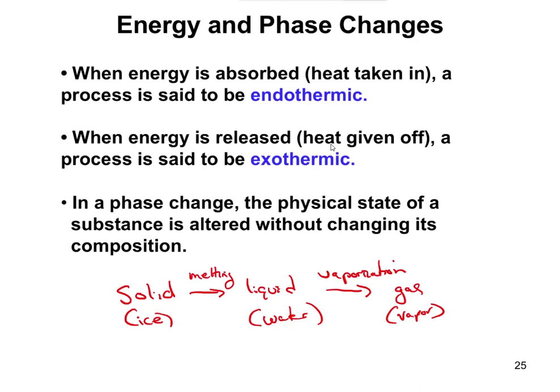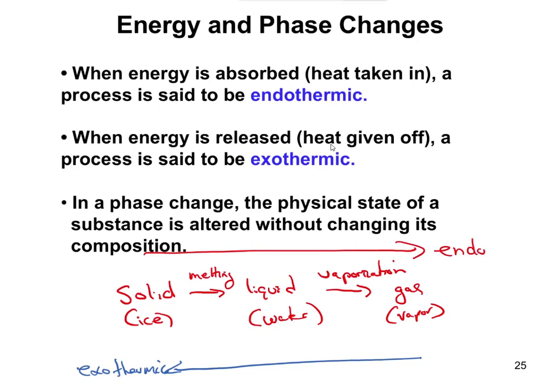The reverse processes are all going to be exothermic. If you go from a gas to a liquid, or a liquid to a solid, those would be exothermic. Going in the other direction is endothermic. The exothermic ones are a little harder to visualize, but gases have high energy because particles are flying all over the place. If you change them into a liquid, the particles get much closer together and don't have as much energy. Where does that energy go? We know energy can't be created nor destroyed, so it's released as heat.